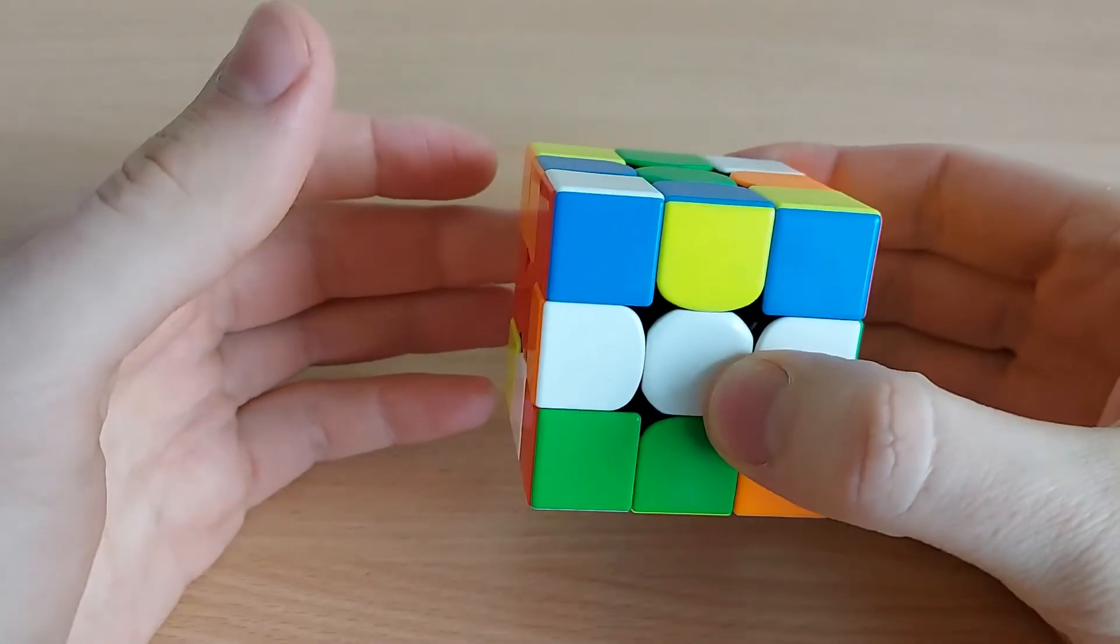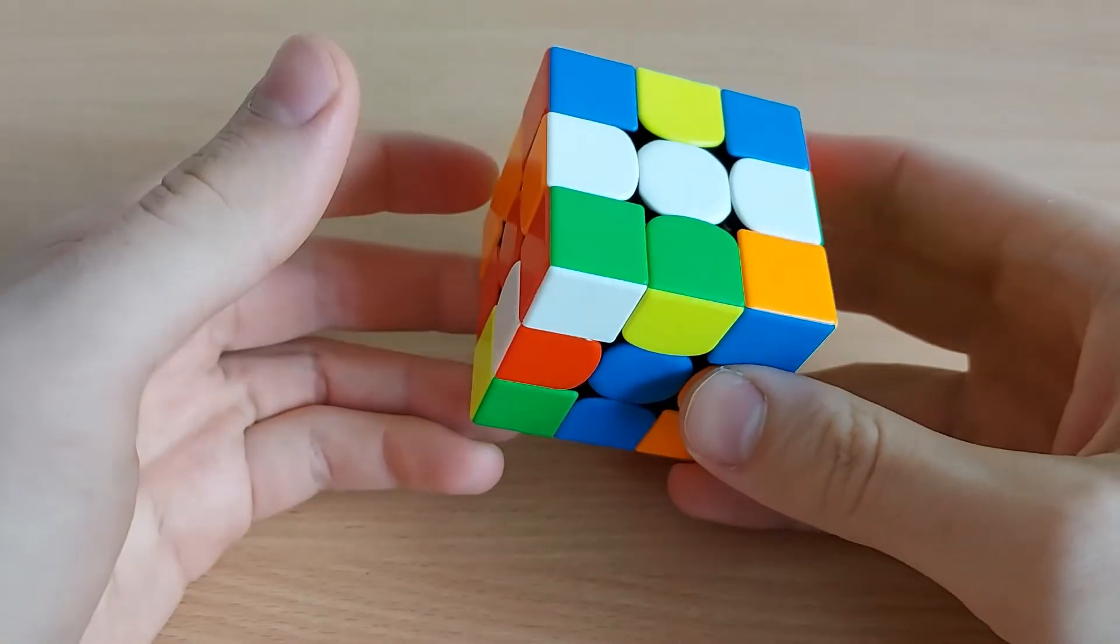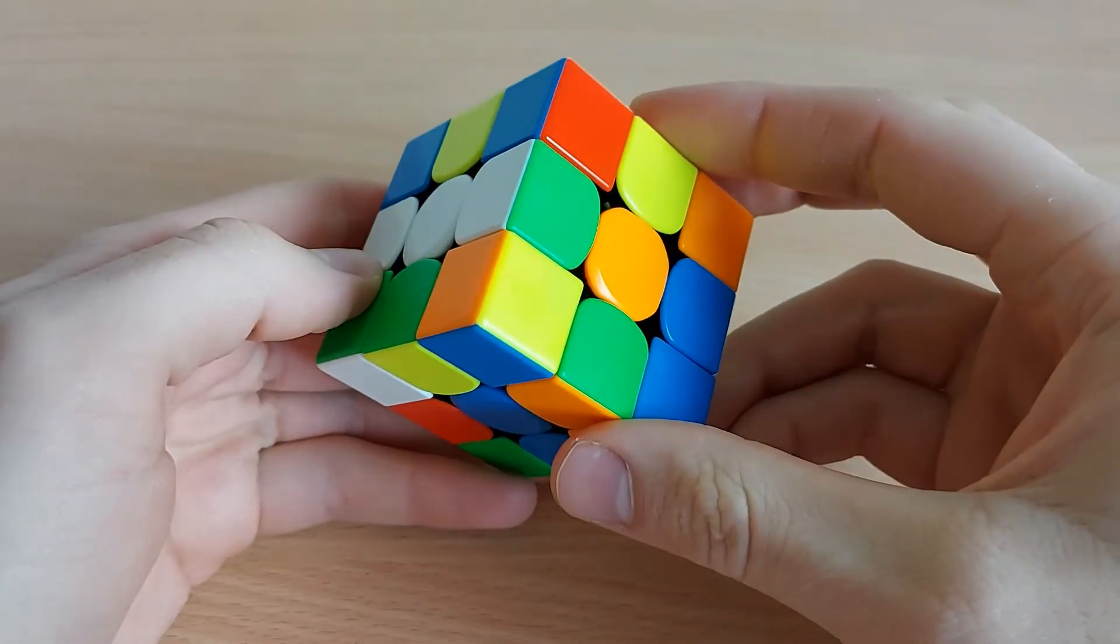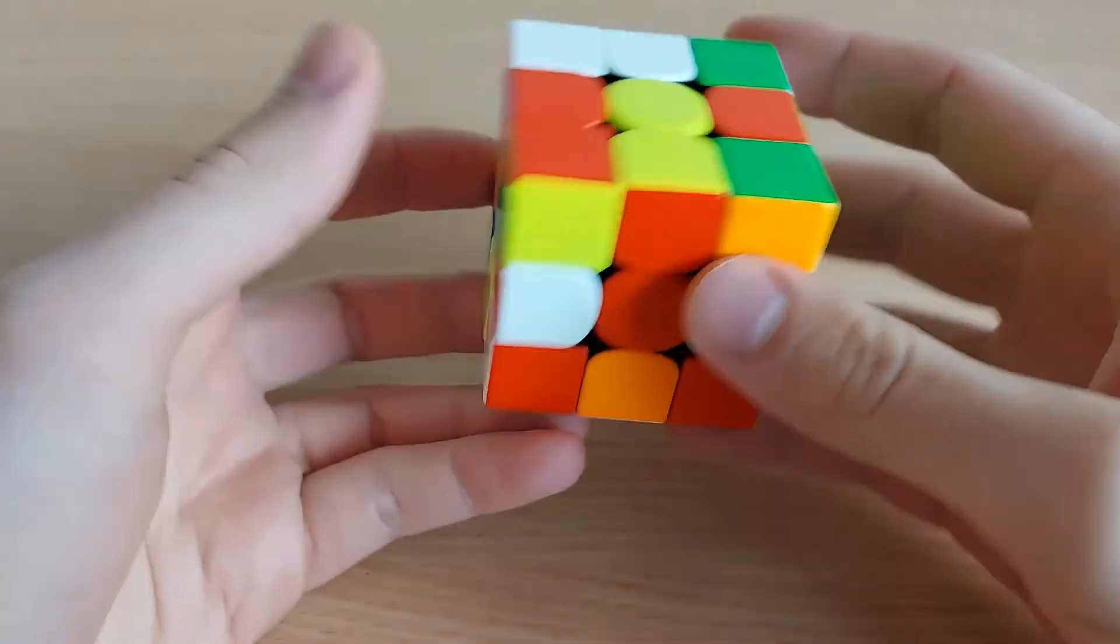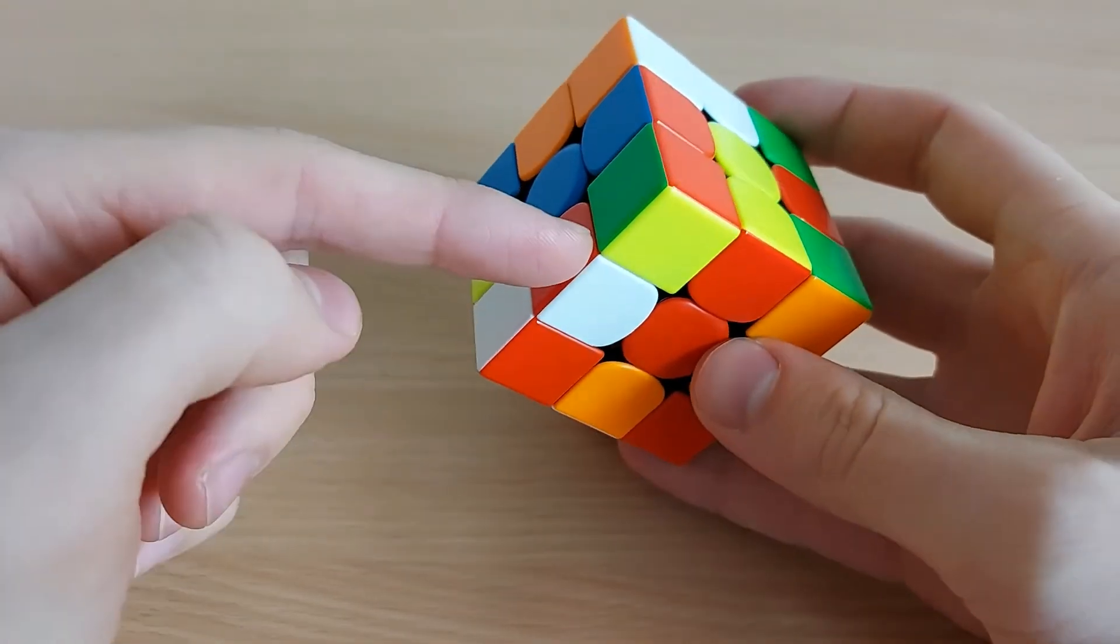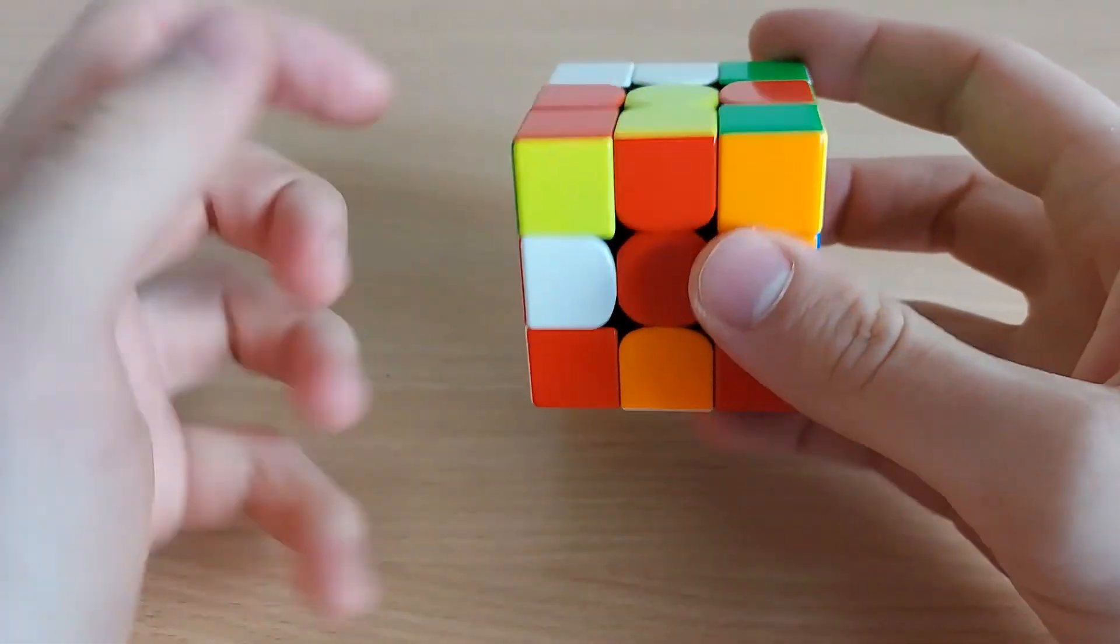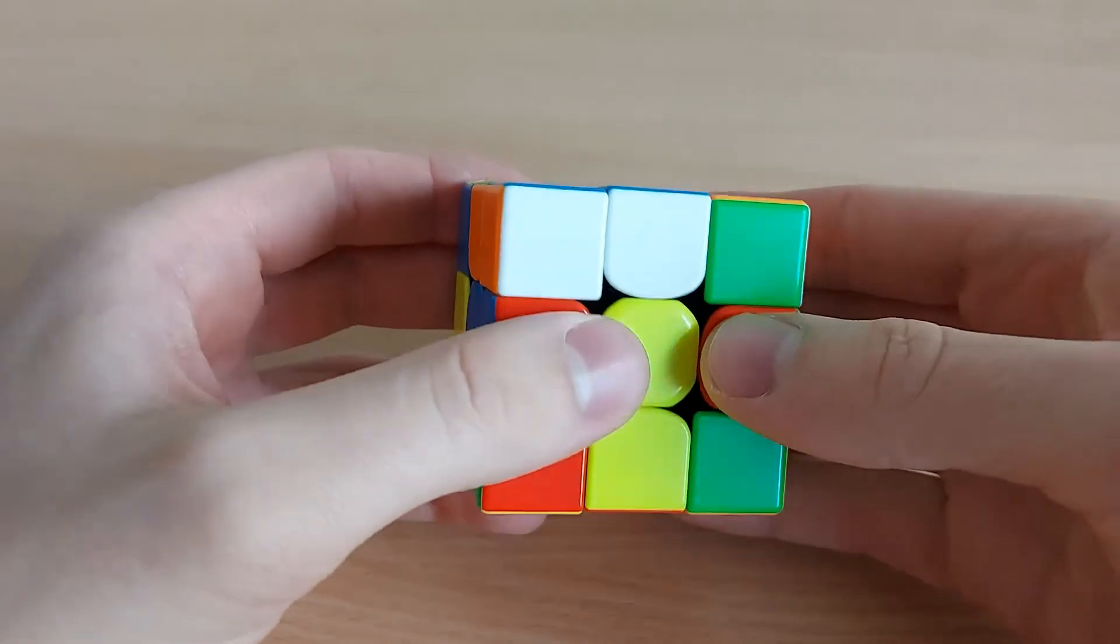You can become color neutral because white cross is not always very good. So if you choose, for example, a red cross, you can see these three pieces can go very easy like so.